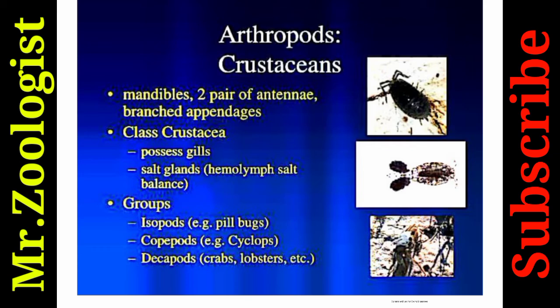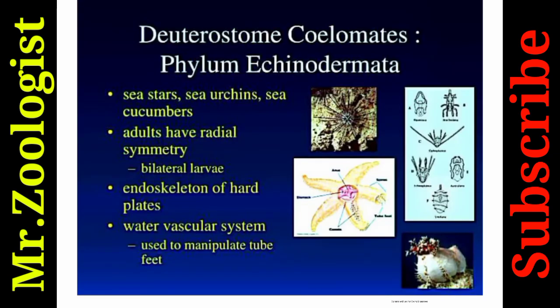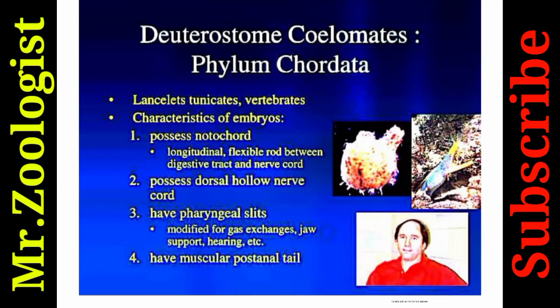Phylum Echinodermata includes sea stars, sea urchins, and sea cucumbers. Adults have radial symmetry, a bilateral larva is present, and they have a skeleton of hard plates and a water vascular system used to manipulate and feed. Phylum Chordata includes lancelets, tunicates, and vertebrates. Characteristics of chordate embryos include a notochord — a longitudinal flexible rod between the digestive tract and nerve cord.